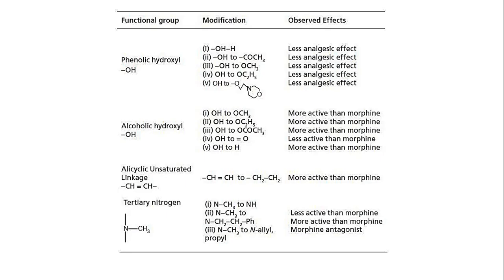This is a summary of the structure-activity relationship of morphine. The following activities or effects are observed when substitutions are carried out at the phenolic hydroxyl, alcoholic hydroxyl, alicyclic ring, alicyclic linkage, and tertiary nitrogen, as given in the table.